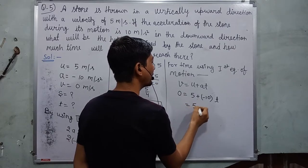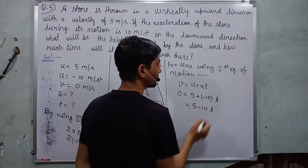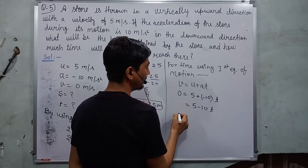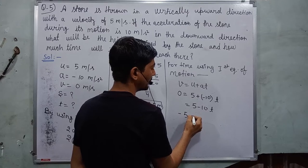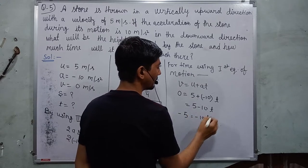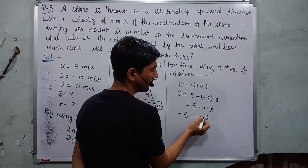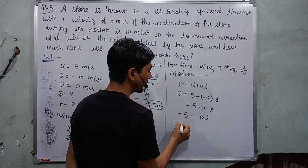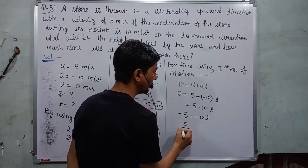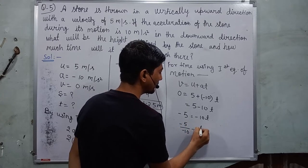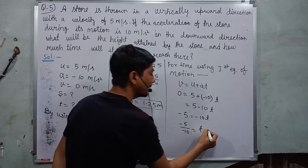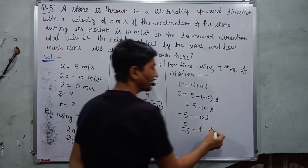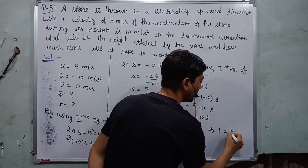5 minus 10 into T and this 5 go towards the left hand side become negative 5 is equal to negative 10 T. And after T is in the multiple of negative 10, we send this negative 10 towards the left hand side become minus 5 over minus 10 is equal to T. Negative negative sign cancel out become T is equal to 1 by 2.